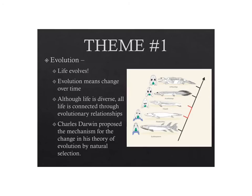The first theme is evolution. Of course, life evolves, and we're going to be spending a good deal of time talking about how life evolves. Evolution means change over time, and Darwin proposed the mechanism by which evolution occurs. He didn't come up with the idea of evolution — he came up with how it happens, and we call this natural selection. Even though we see diversity in living things, they are all connected through evolutionary relationships and came from a common ancestor.